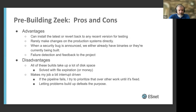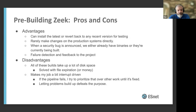Disadvantages: aside from the amount of work it took to build it, there aren't many. These builds take up a lot of disk space, which we solved by expiring them — you could store them forever if you wanted to, but six months down the road it's unlikely we'll need binaries from some old topic branch. It has also made my job a little interrupt-driven, and that's my own fault. When the Zeek pipeline fails, I try to prioritize that over any other work until it's fixed, because letting problems build up defeats the purpose — the whole point is it's ready to go at any time.